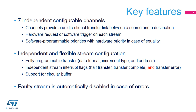Independent channel interrupt flags allow triggering half-transfer, transfer complete, and transfer error events. In case of a transfer error, the faulty channel is automatically disabled without any impact on the other active DMA channels.